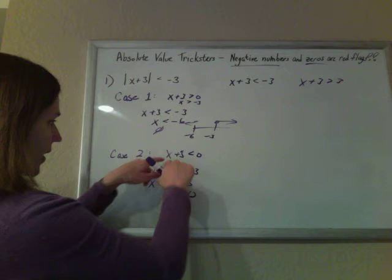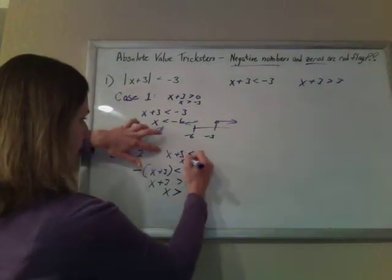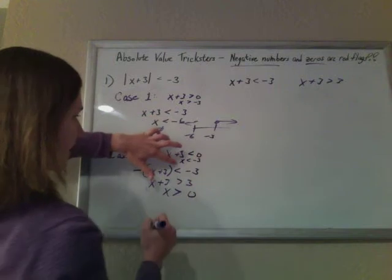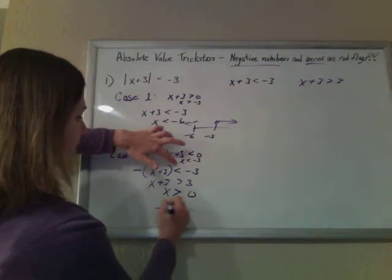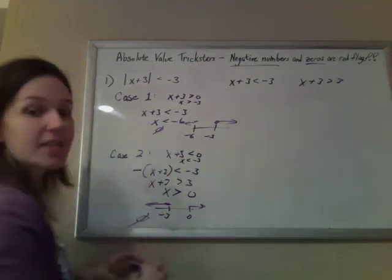And so, okay, if x, then you go back up and you go, does this make any sense? In this case here, x is supposed to be less than negative 3. But you can't be less than negative 3 and greater than 0 at the same time.